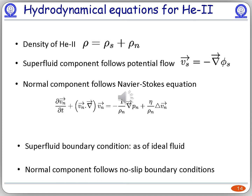These are the hydrodynamical equations for helium-4 superfluid. The density of the fluid can be taken as the sum of the superfluid component and the normal component. Since the superfluid component follows potential flow, that is curl of superfluid velocity equals zero, the superfluid velocity can be taken as the gradient of some scalar potential. The normal component, because it has finite viscosity, follows the Navier-Stokes equation as shown. The superfluid boundary condition is the same as that of ideal fluid: the normal component of fluid velocity at the vicinity of the boundary wall vanishes.